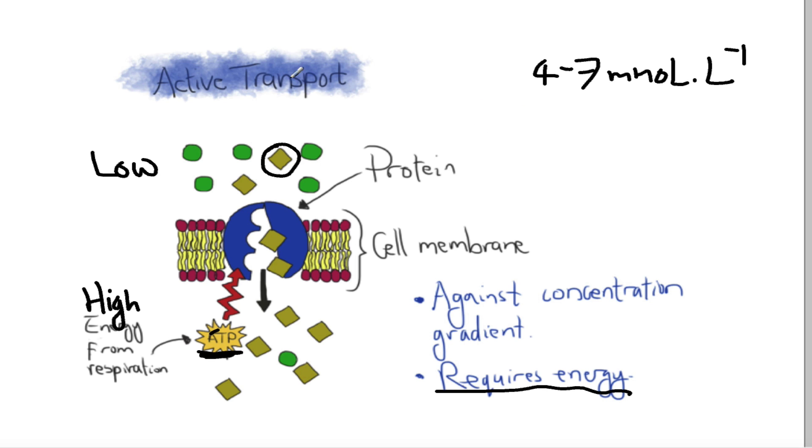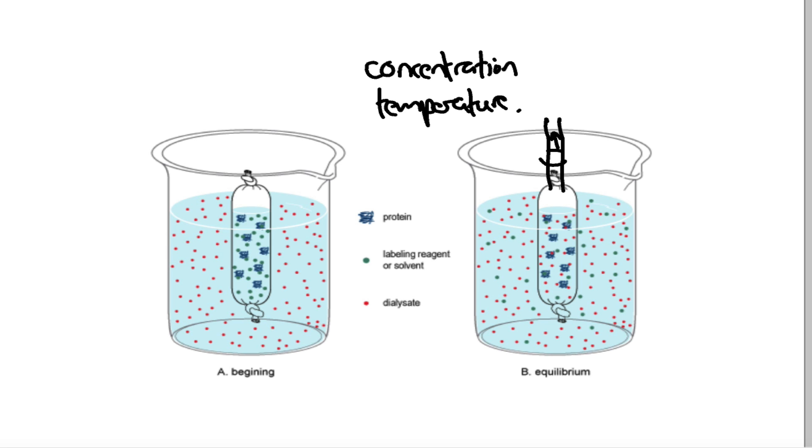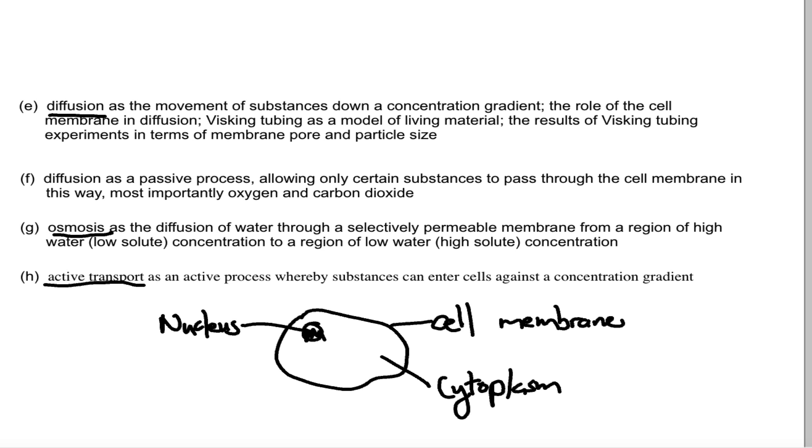So if I just go back to the specification statements, just make sure we're happy with all of that. Diffusion is the movement of substances down the concentration gradient. We've mentioned the use of visking tubing, so hopefully you'll be doing that in class, but it's a passive process - there's no energy input required at all. We've mentioned oxygen and carbon dioxide as examples from respiration. Osmosis being the specific diffusion of water through a selectively permeable membrane from a region of high to low water concentration. And then finally, as I said it is higher tier but I think we should cover it anyway - active transport, which is active meaning it needs energy, where substances can enter cells against the concentration gradient.